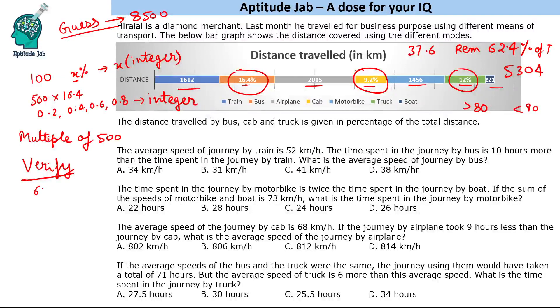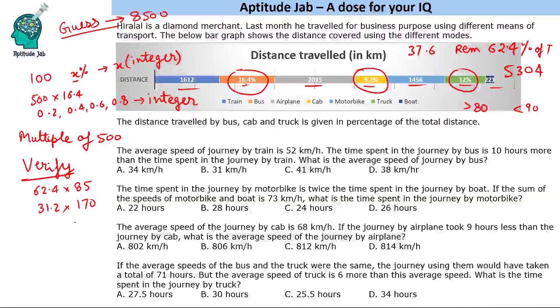What I will do is 62.4 into 85 in order to get this number. So what I can do is I can just double this, that will become 170, and take half of this, that is 31.2. So 312 into 17. If I do 17 times 2 is 34, 3 carries, 20, 2 carries, 53. Wow, I got the same number. So that was the total distance, 8500.